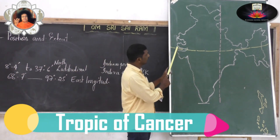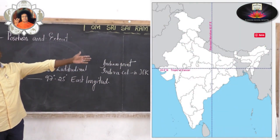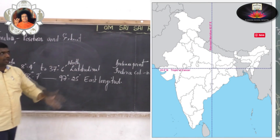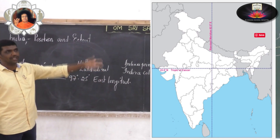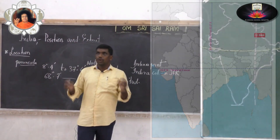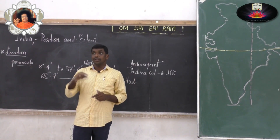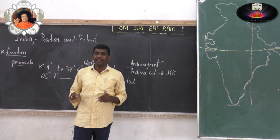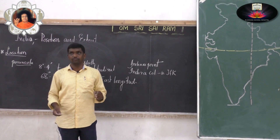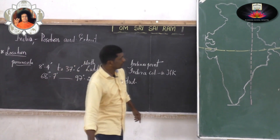The 23 and a half degree north latitude — the Tropic of Cancer — passes through the middle of the country. You can see the graphic image on the board. The 82 and a half degree east longitude is the central meridian of India.